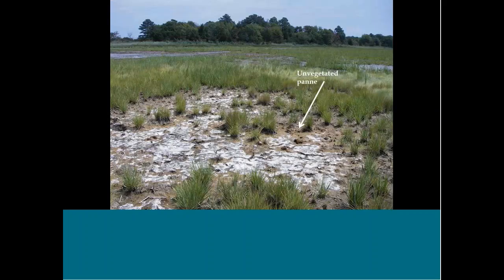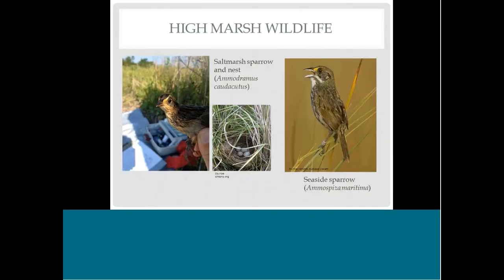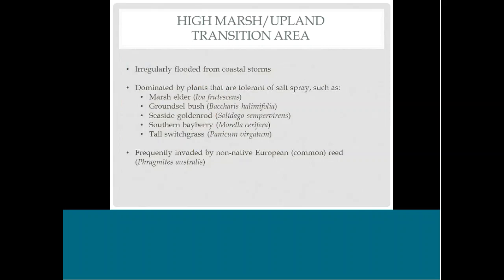An unvegetated pan photo shows it recently dried out with very little vegetation and some algae starting to grow. High marsh wildlife includes obligate species like salt marsh sparrows and seaside sparrows, which use high marsh habitat for nesting. Their nests are within the grasses and very challenging to see. High marsh habitat is also very vulnerable to sea level rise, so be aware of its importance for these species when you see it at or near your site.